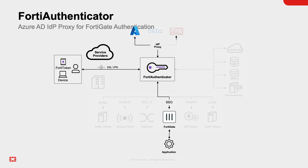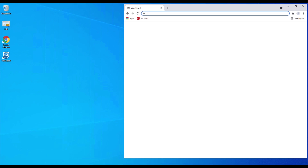When the user attempts to establish an SSL VPN connection to the FortiGate, the authentication request is redirected by FortiAuthenticator to the IDP — in this case, Azure AD. Upon the completion of the authentication, FortiToken along with FortiAuthenticator will provide the second factor as an added protection. Let's take a look at this process in action.